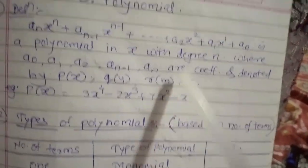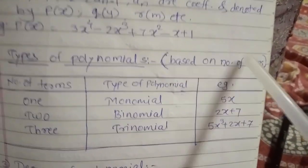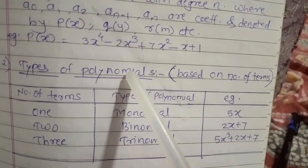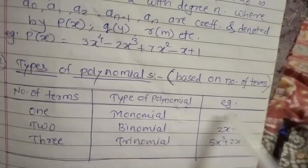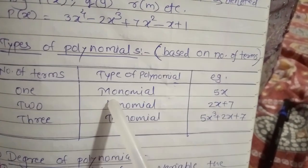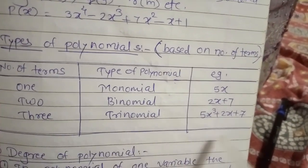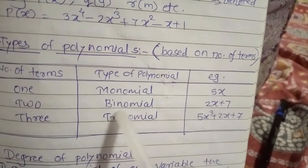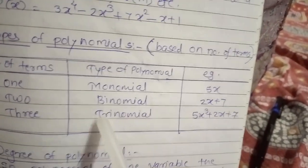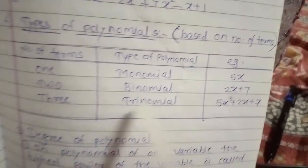Now we are going to see the types of polynomial based on the number of terms. Polynomials are divided into three types. If there is only one term, like 5x, such a polynomial is called a monomial — 'mono' means single. If there are two terms, like 2x + 7, it is called a binomial — 'bi' means two. If there are three terms, like 5x^3 + 2x + 7, it is called a trinomial.